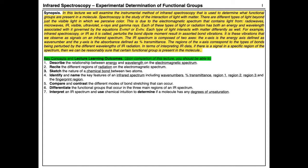The IR spectrum is composed of two axes. The x-axis is the energy axis defined as wave numbers, and the y-axis is absorbance defined as percent transmittance. The regions of the x-axis correspond to the different types of bonds being perturbed by different wavelengths of IR radiation. If there is a signal in a specific region, we can be reasonably sure that functional group is present. Alternatively, if there is an absence of a signal, we can be sure that functional group is not present.